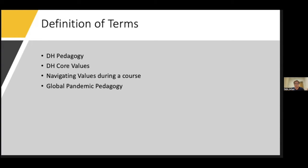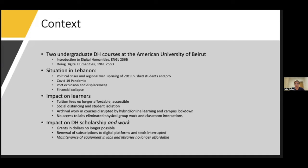Reflecting on this in a post-pandemic era, I may have reason to celebrate that some of the DH core values assisted me and many of my students during unprecedented times. The question remains: what is still needed for our core values to steer us towards a more inclusive and sustainable global DH pedagogy, and how can global DH pedagogy learn from local contexts?